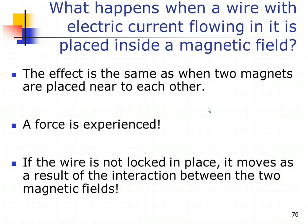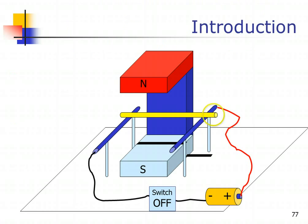this wire will therefore experience the force more significantly in the sense that it will start to move. If it is a force of attraction, the wire will move towards the magnet. If it is a force of repulsion, the wire will move away from the magnet. So let's have a look at the diagram to illustrate what I just explained.